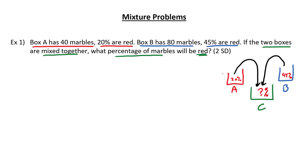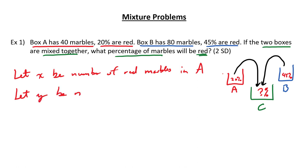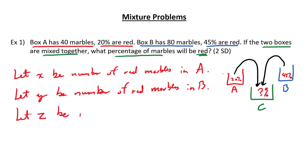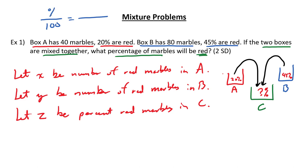Let's determine the number of red marbles in each box — those will be our unknowns. Let X be the number of red marbles in box A, Y be the number of red marbles in B, and Z be the percent red marbles in box C, our final box. Thinking back to our previous lecture on percentages: percent means per 100, so it's the numerator above a denominator of 100. In word problems, 'of' references the denominator and 'is' references the numerator.